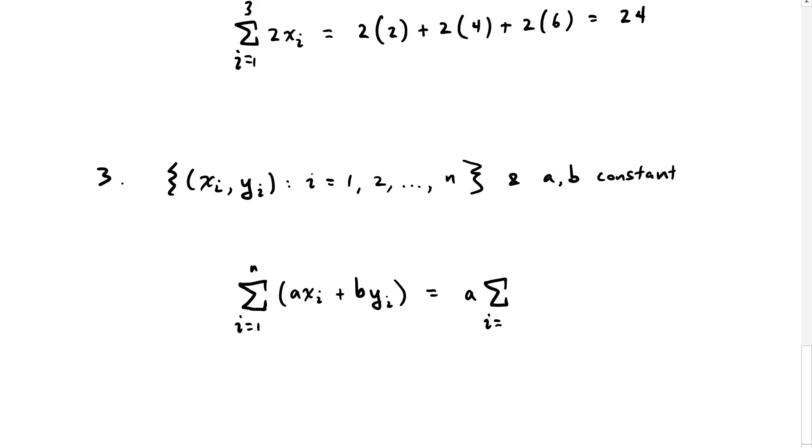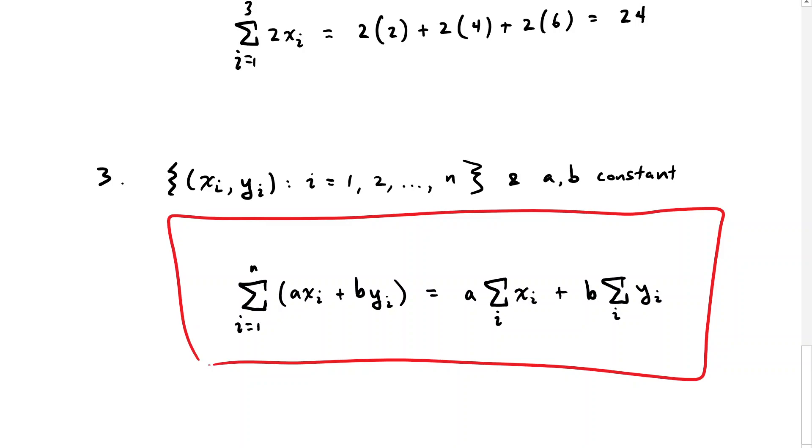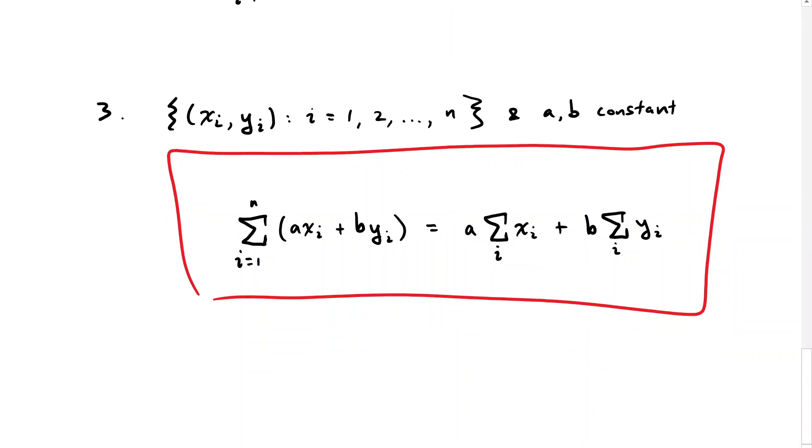Just as before, not only can we factor out common numbers, we can also distribute the summation operator so that we have a times the summation of all the xi's plus b times the summation of all the yi's. So there we have a distributive property from summation notation. But this only works for addition because it is a summation property.